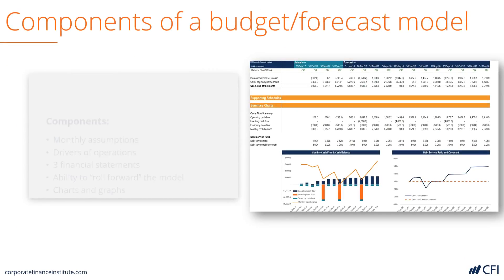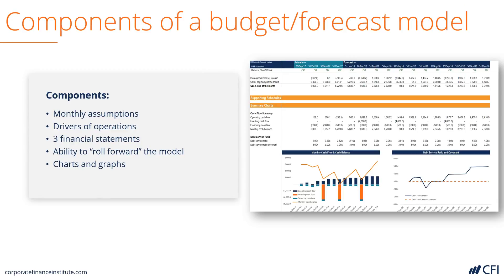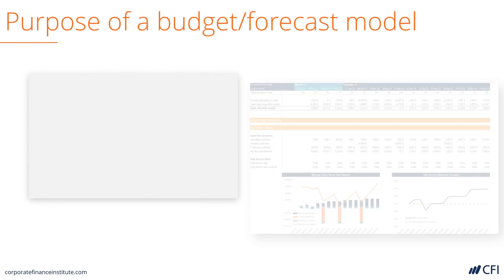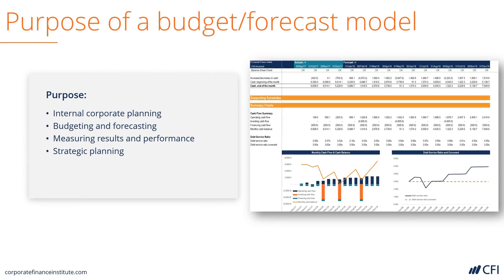Moving beyond a DCF model, there are budgeting and forecasting models that companies use for managing their operations in-house. It's usually a monthly type of model that has a lot of detail around the operations of the business, and rolls forward each month to add another forecast. The purpose of the model is for internal planning, budgeting, evaluating performance of the business, and strategic planning.